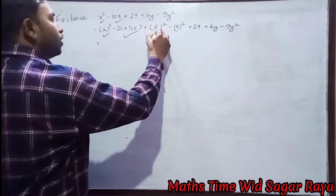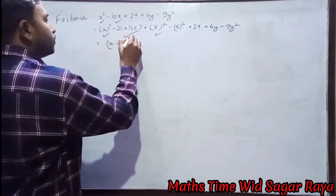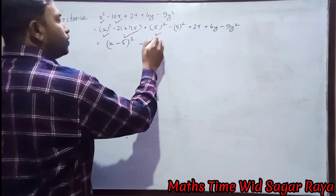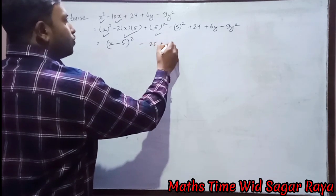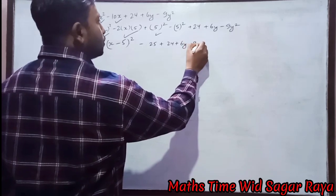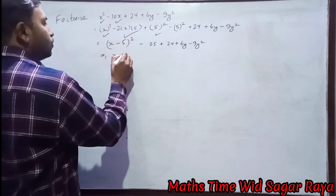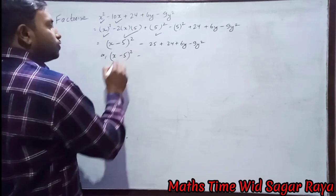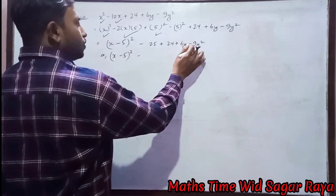So +24 + 6y - 9y². Then this a² - 2ab + b² becomes (x - 5)². Now 5² means 25, plus 24 + 6y - 9y².